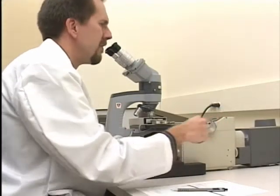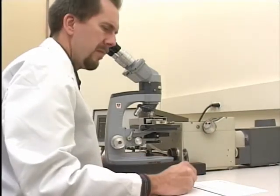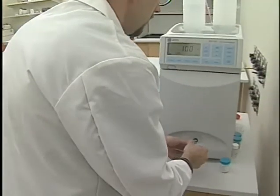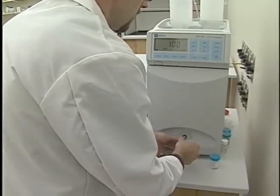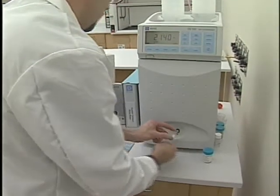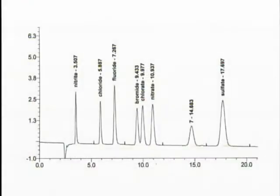Microchemistry examines materials used to make criminal devices such as pipe bombs. An ion chromatograph instrument is used to separate inorganic ions such as nitrates and perchlorates. The instrument creates a spectrum which is used to compare known and unknown evidence specimens.